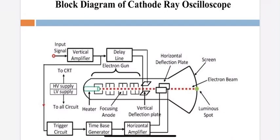There is a delay block — a delay line — between the vertical amplifier and the vertical deflection plates. This delay line is used to create or generate a delay.